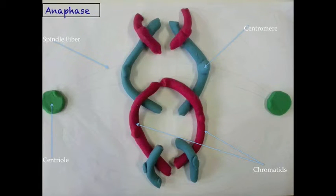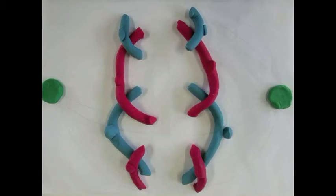During early anaphase, the chromosomes are pulled to opposite poles of the cell. They are no longer chromosomes, but are now chromatids.